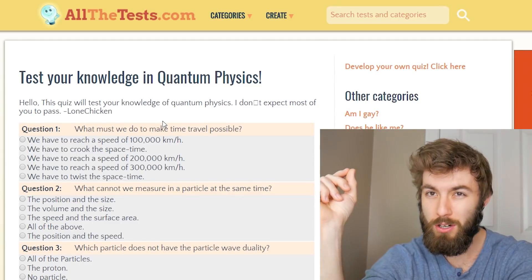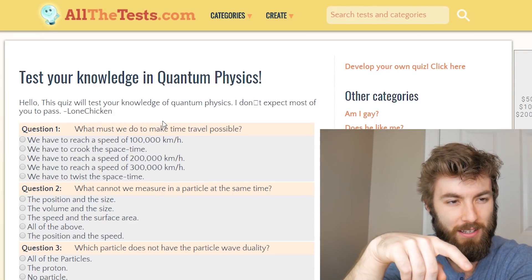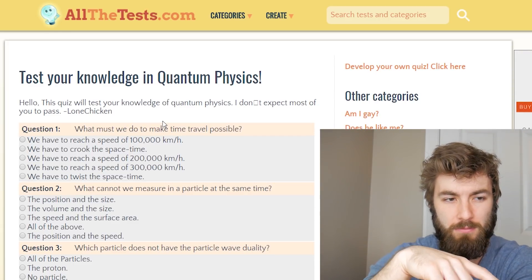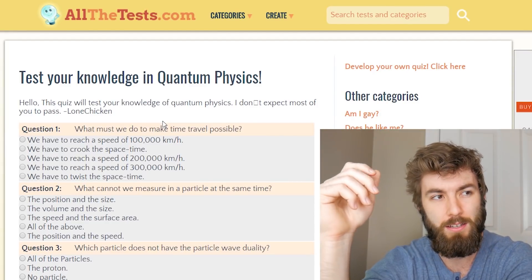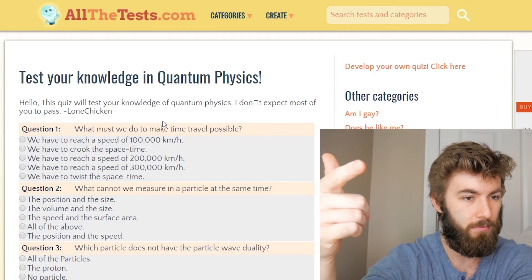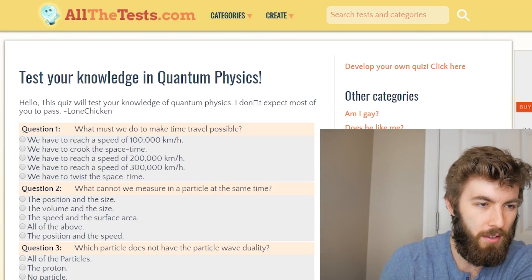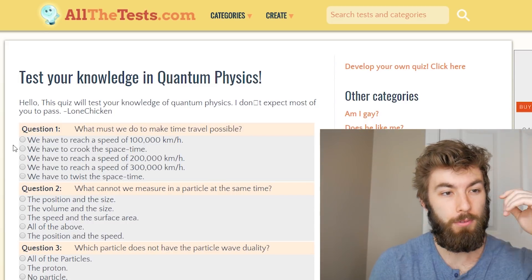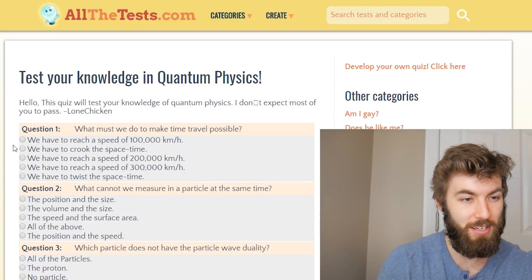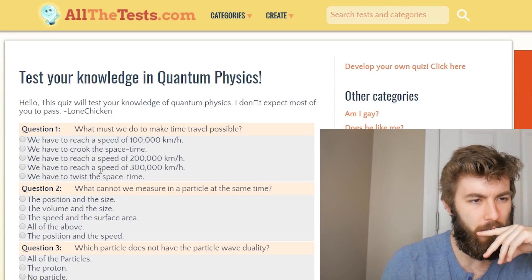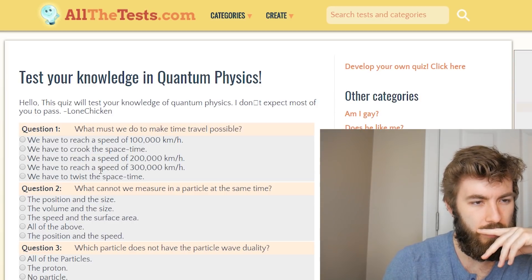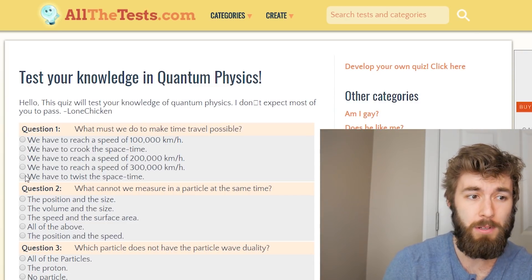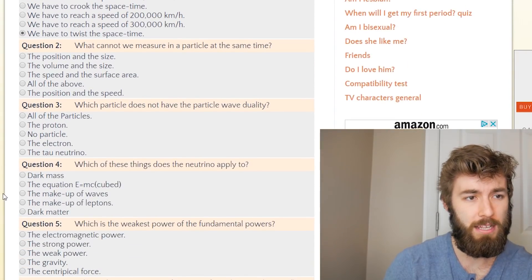So this is kind of tricky because part of me thinks, can't tell if they think that the speed of light is 300,000 kilometers per hour when it's roughly 300,000 kilometers per second, right? Because it's 300 million meters per second. So assuming that that's not a typo and they don't mean per second, now we just have to interpret crooking the space time versus twisting the space time. I'm going to go out on a limb here and I'm going to twist the space time.